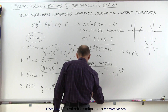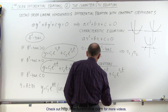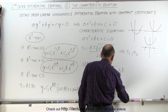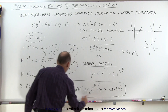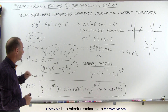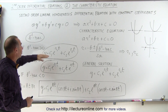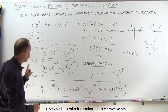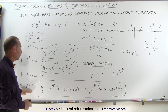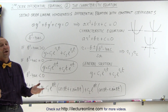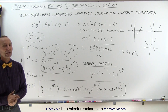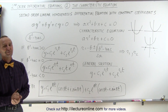So we get plus C2 times e to the at times the imaginary part written as cosine of bt minus i times the sine of bt. That is the solution when B squared minus 4AC is less than zero. So there are three possible solutions: when B squared minus 4AC is greater than zero we use the two-root exponential form; when it equals zero we include a t factor; and when it's less than zero we use the cosine and sine form. That's how we find solutions to the second order linear homogeneous differential equation with constant coefficients. We'll see examples in future videos.